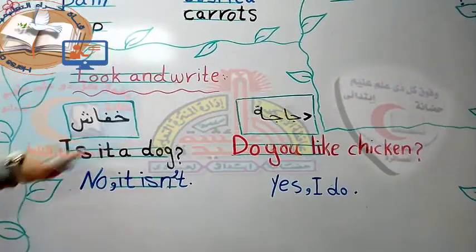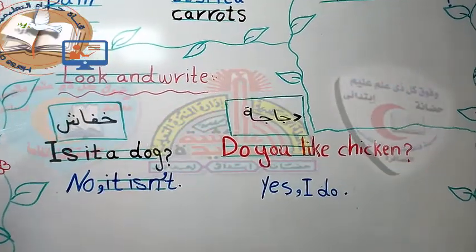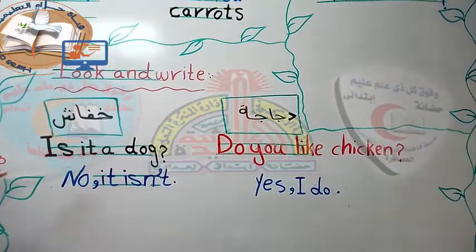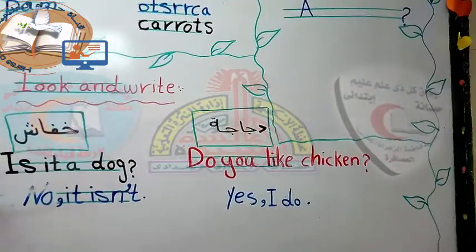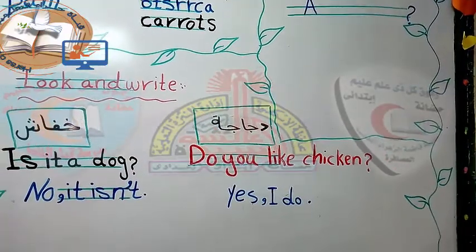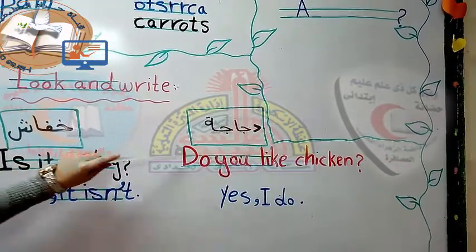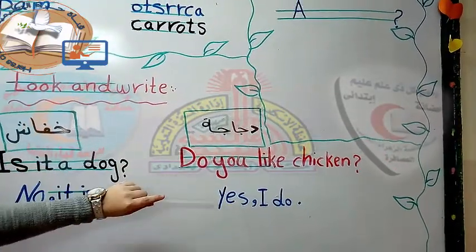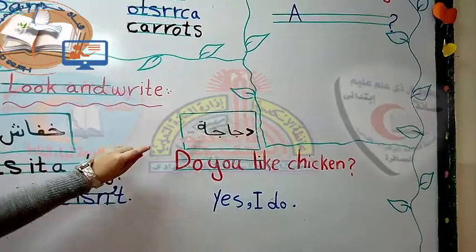Look and write. Is it a dog? No, it isn't. Do you like chicken? Yes, I do.